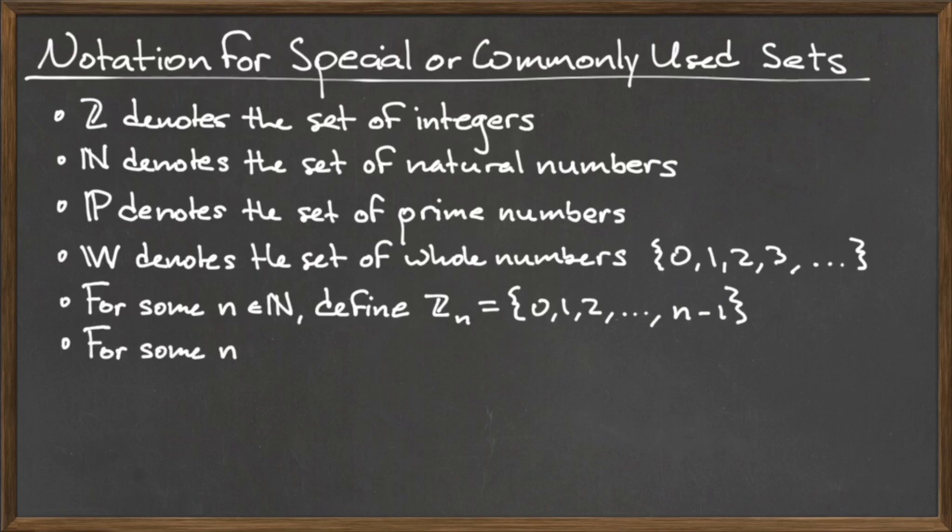Similar to the set Zn, for some natural number N, we may define the set Zn without 0 to be the set containing the elements 1, 2, and all of the positive integers up to N-1. We may also refer to this set as Zn cross for simplicity.